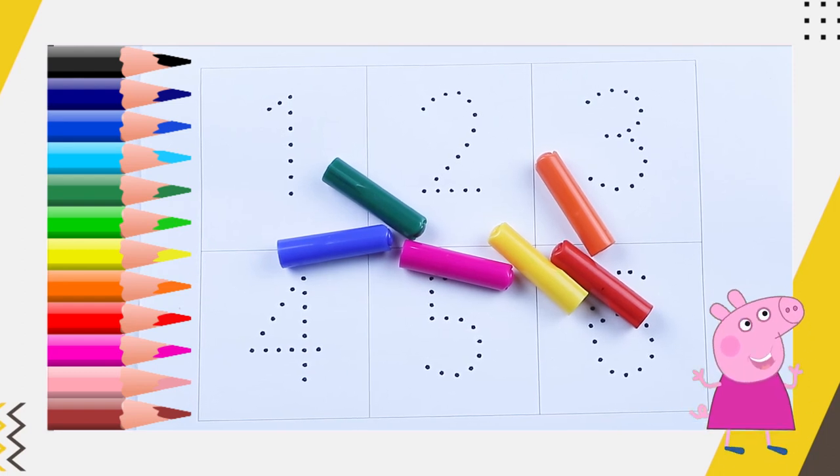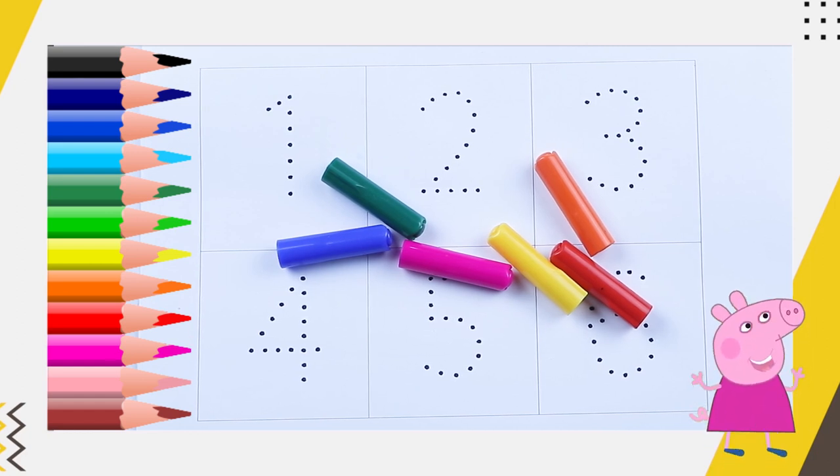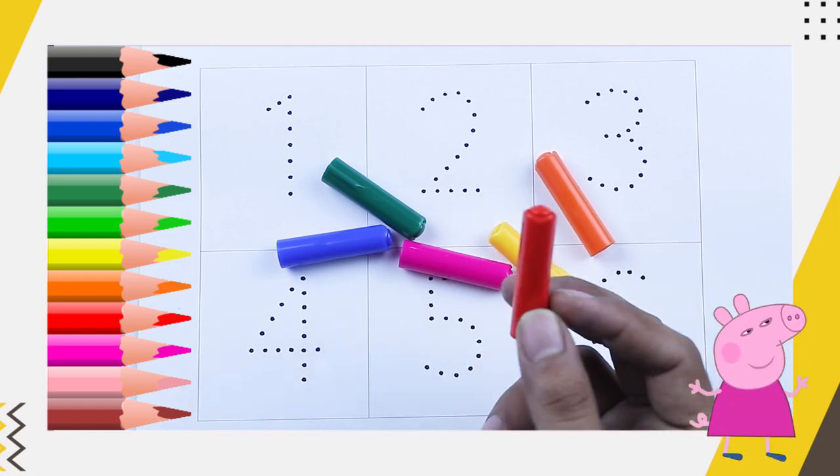Hello friends! Today we will learn numbers 1, 2, 3, 4, 5, 6, 7, 8, 9, 10 with dotted paper. This is red color.